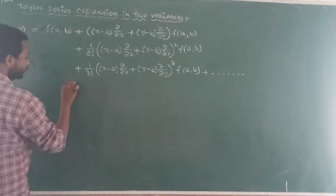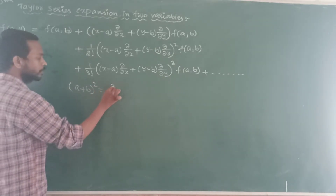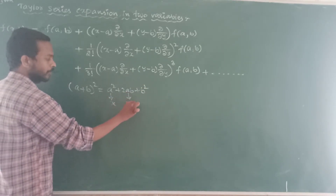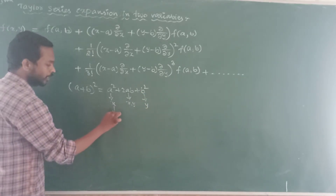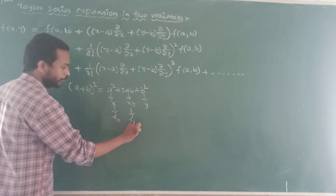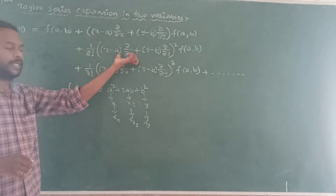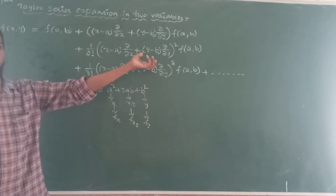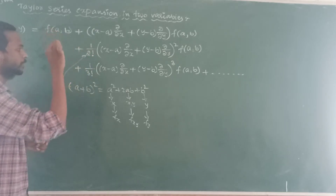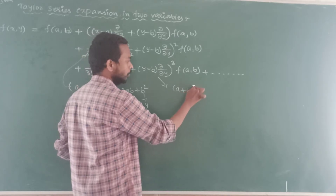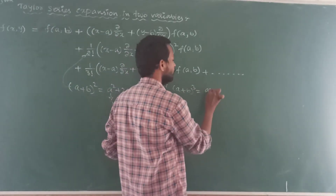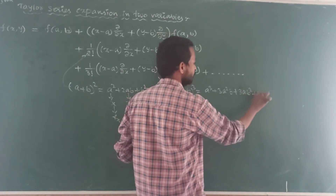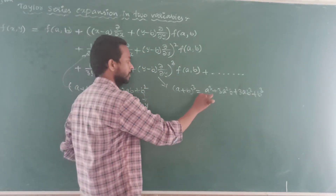Here, (a + b)² is nothing but a² + 2ab + b². So here a is nothing but x and b is nothing but y. For remembering purposes I am writing like this — we should not write x equals a or y equals k like that. So here x means Fx — partial derivative with respect to x — and here Fxy with x two times.